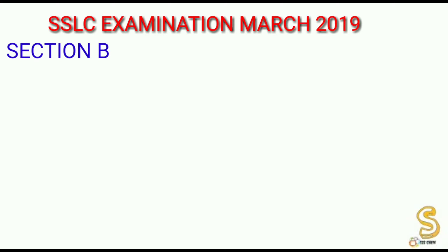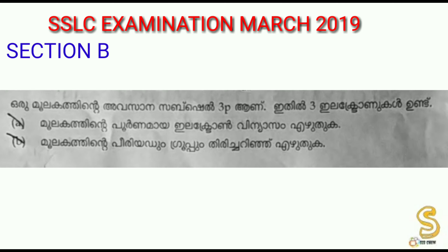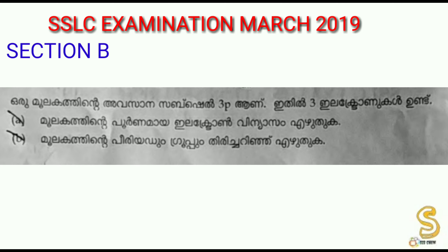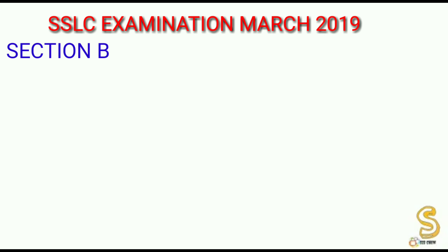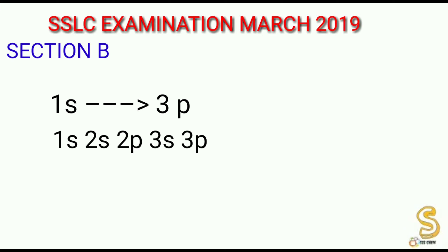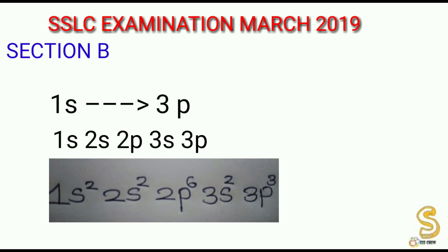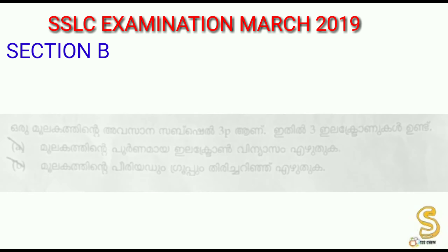In section B, first question. The subshell is 3p with 3 electrons. The electronic configuration goes: 1s, 2s, 2p, 3s, 3p. This is the third subshell with 3 electrons. The full configuration is 1s², 2s², 2p⁶, 3s², 3p³.